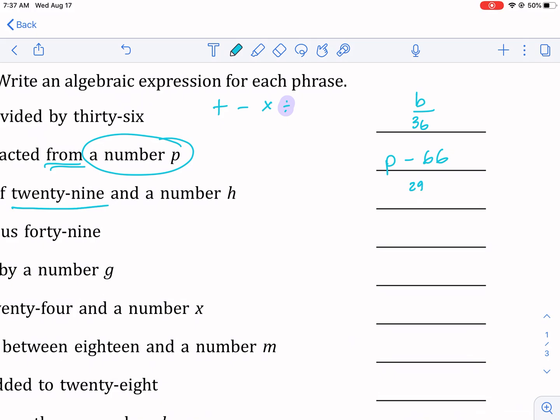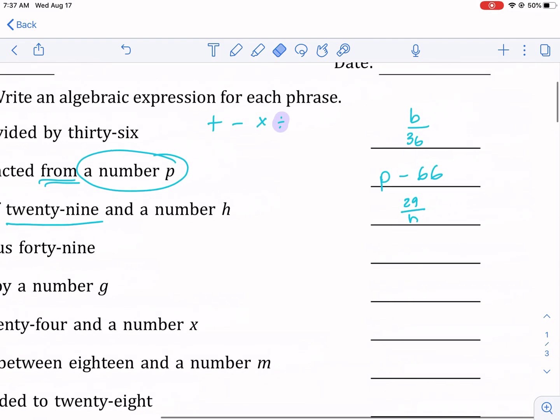And if it says 29 first, that's the number that goes on top, and then h right here. So we could write it again—we could write it 29 divided by h—but again we want to emphasize that we should be writing it as a fraction: 29 divided by h.